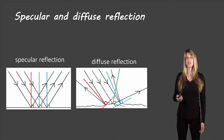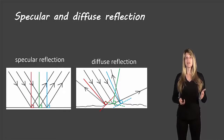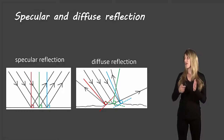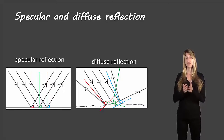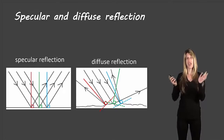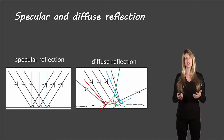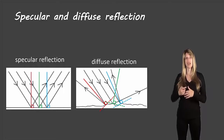The last idea is the difference between specular and diffuse reflection. Specular reflection shows all of the incident rays and reflected rays parallel to each other, which happens with a smooth surface. With a bumpy surface, you get diffuse reflection — the incident rays may come in parallel, but the reflected rays come out at different angles, because the exact location where those rays hit the surface may be at slightly different angles. Since the angle of incidence must equal the angle of reflection, different surface angles produce different reflection angles.